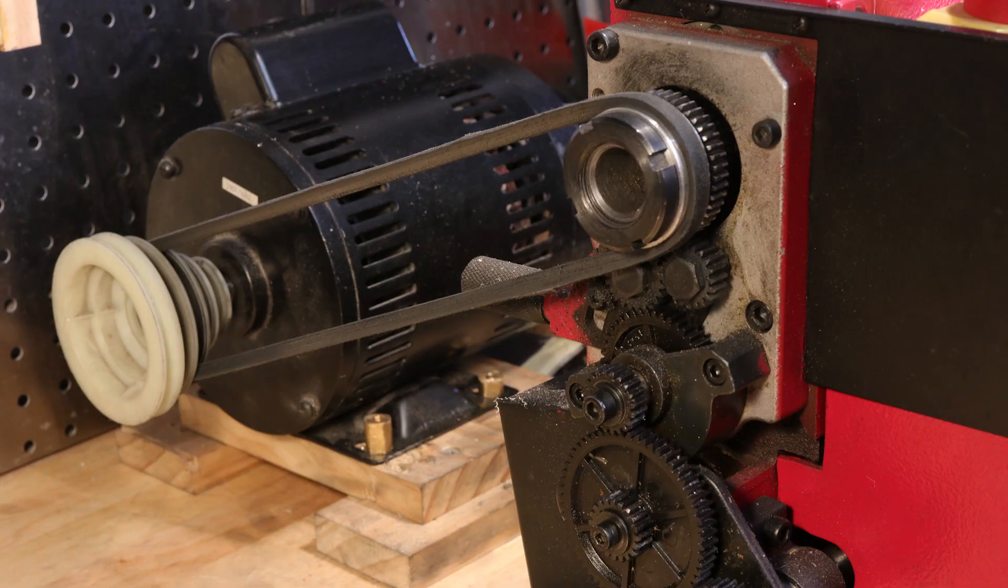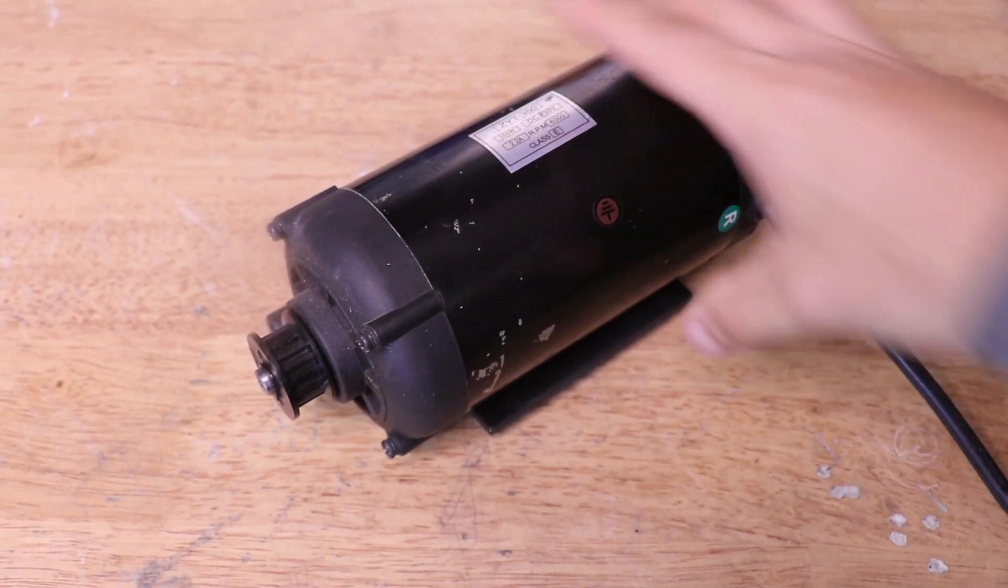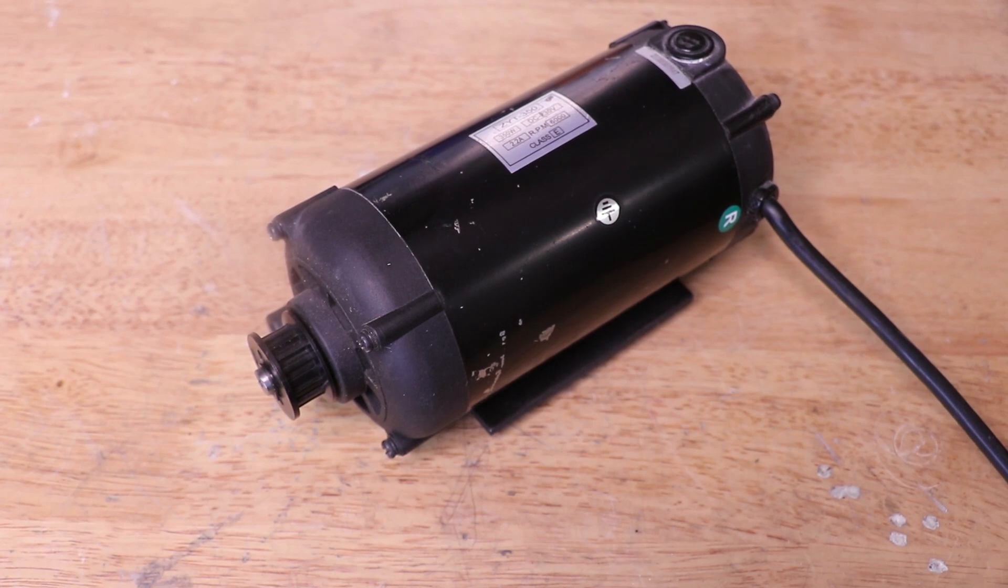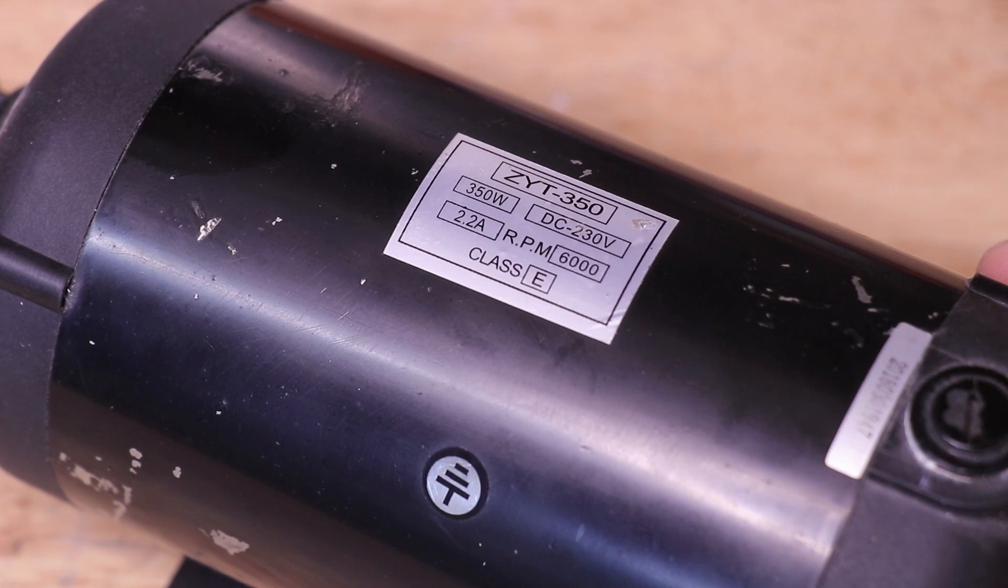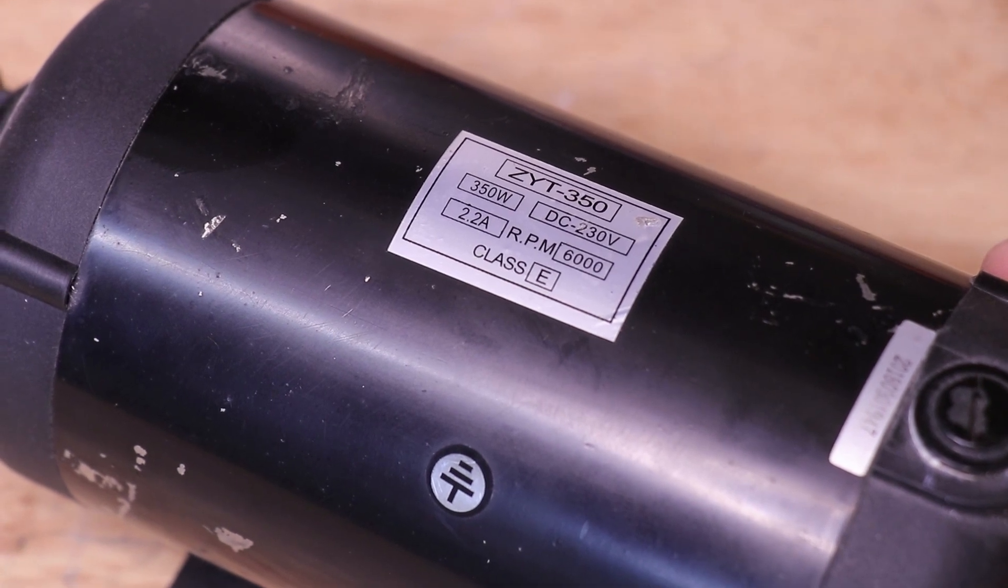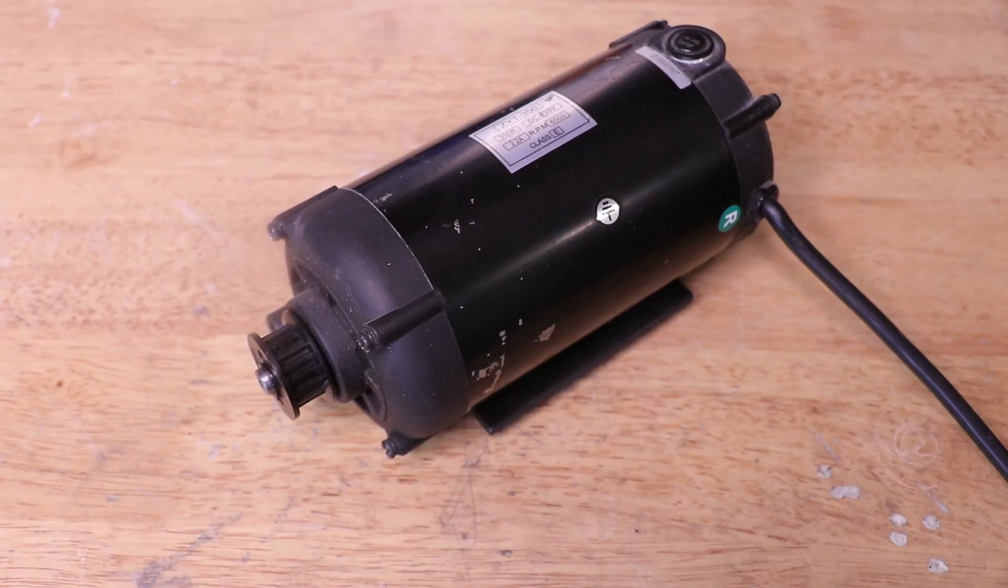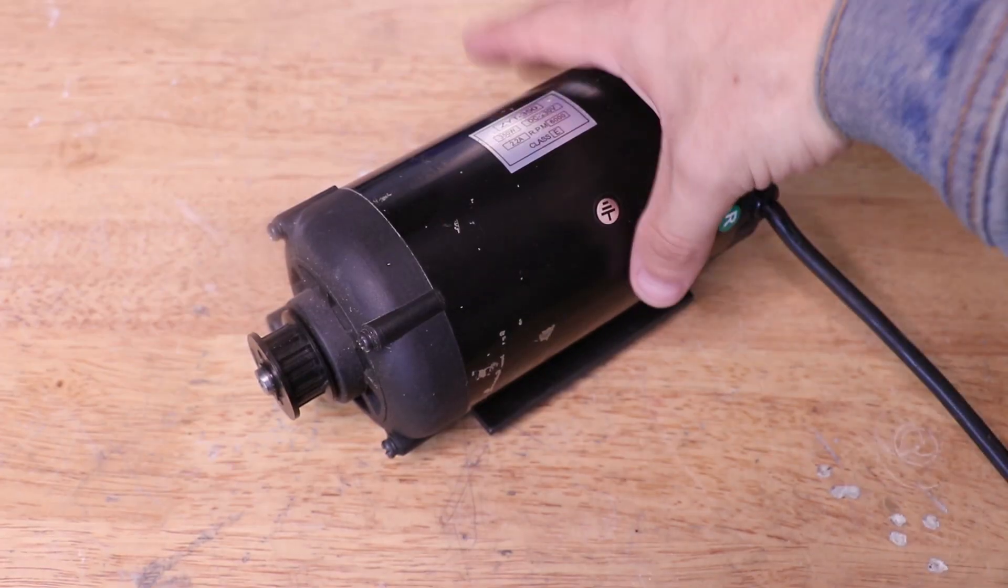Before I talk about the upgraded motor, I'll quickly run you through the motor that the lathe came with. This is a 350 watt brushed DC motor. Brushed meaning there are physical carbon brushes in the motor and today most mini lathes tend to come with brushless motors which I recommend but either way they're going to be running on DC power.